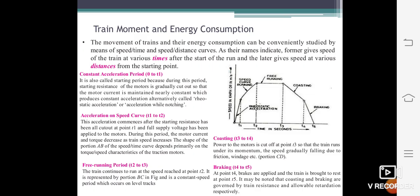The next one is the free running period. In this time the speed of the train will be constant. Next is coasting. The power to the motor is cut off at point T3 so that the train runs under its momentum. The speed gradually falls due to friction and gradient resistance. At point T4, braking is applied and the train is brought to rest at point T5. It may be noted that the coasting and braking are governed by the train resistance and braking effort respectively.